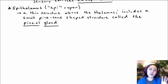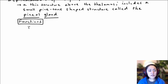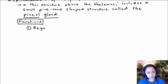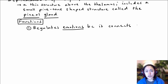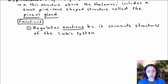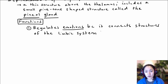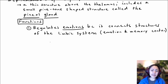Now let's look at the three major functions of the epithalamus. The first major function is helping to regulate emotions. It achieves this because it connects structures of the limbic system — our emotion and memory centers within the brain — with other brain regions.